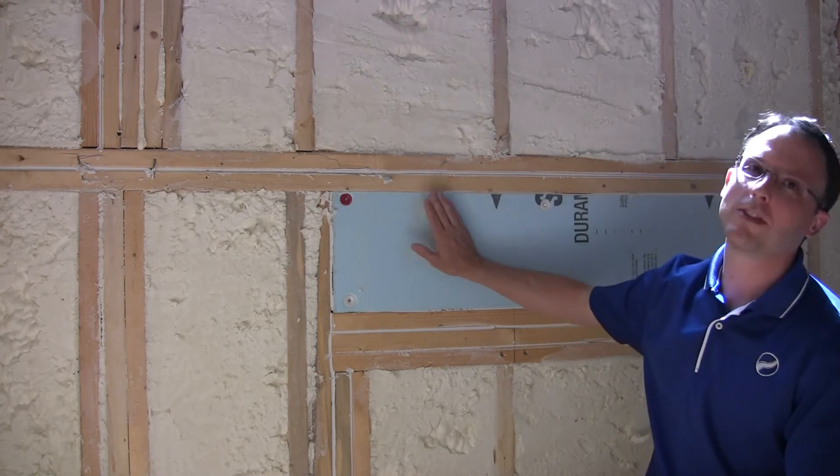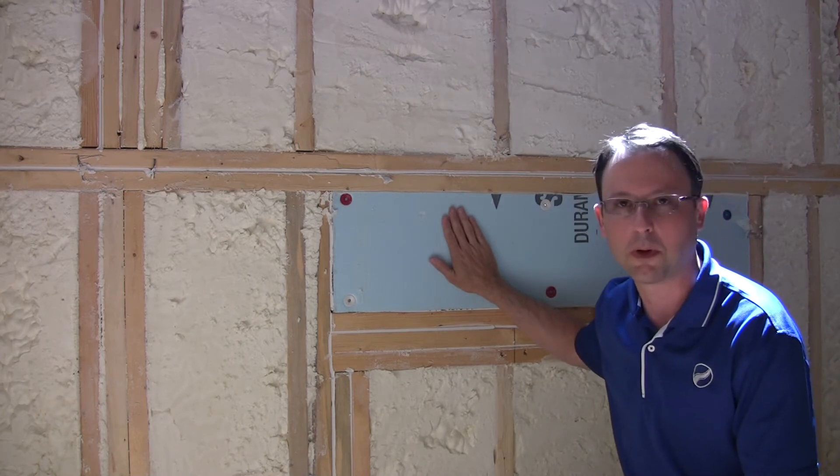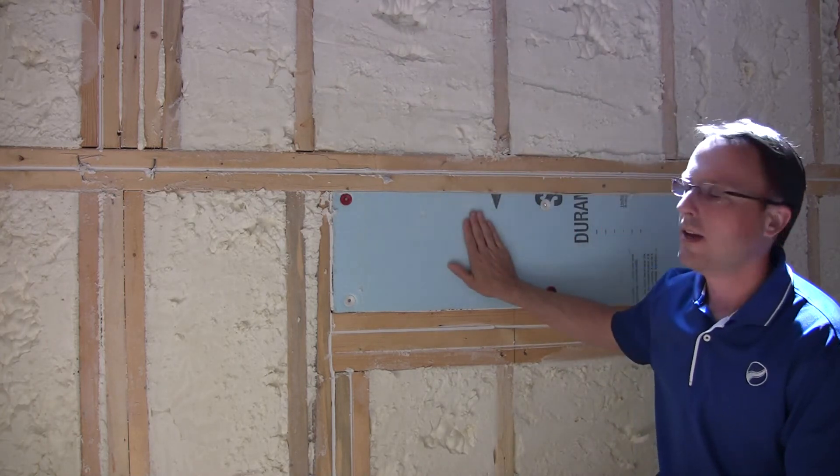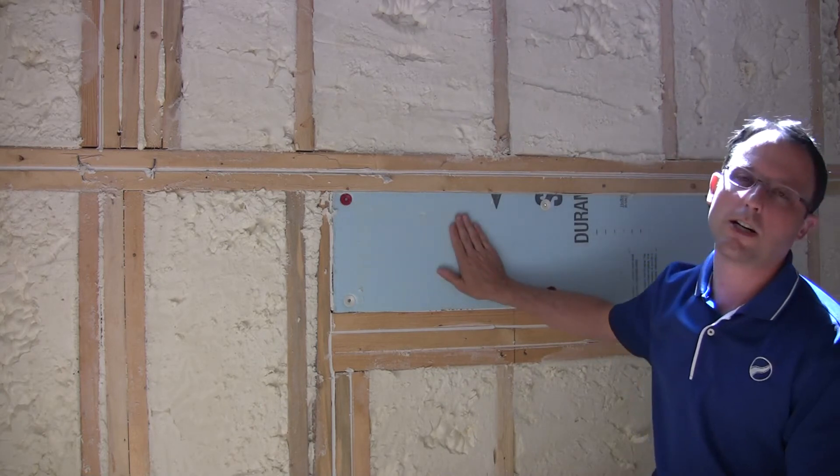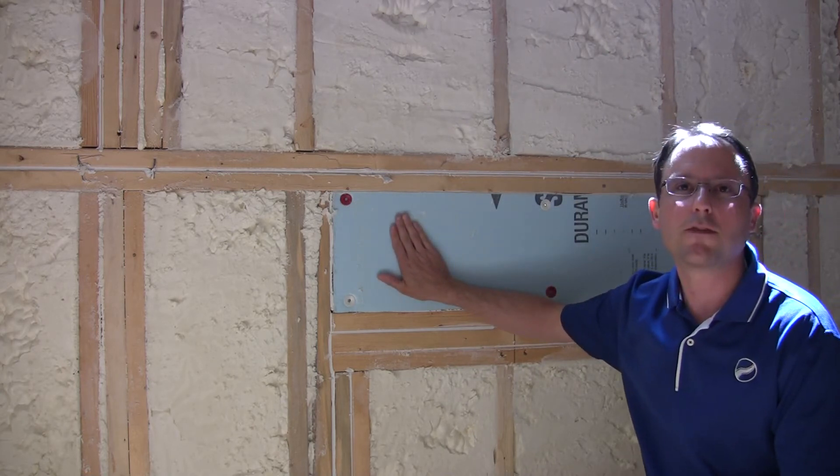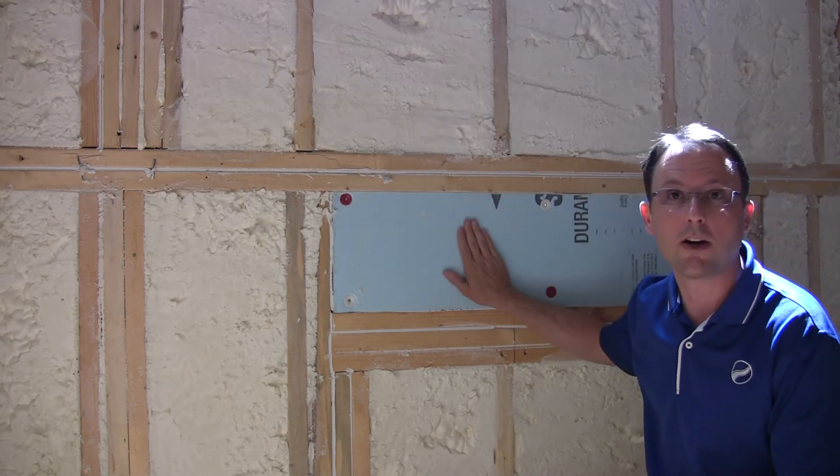So what I've done is I've installed the double 2x10 for structural purposes, and I've put that thermal break, that insulation of a half-inch foam board, so this has a greater R value.